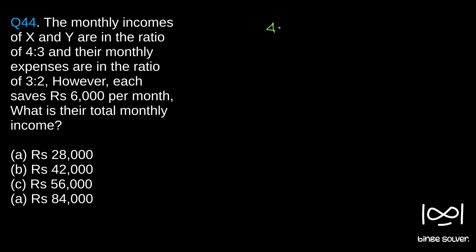It is given their monthly incomes are in the ratio 4 to 3, so we will assume it is 4x to 3x. Their income is 4x and 3x, so the ratio will be 4 to 3. Similarly, their expenses will be in the ratio 3y to 2y.